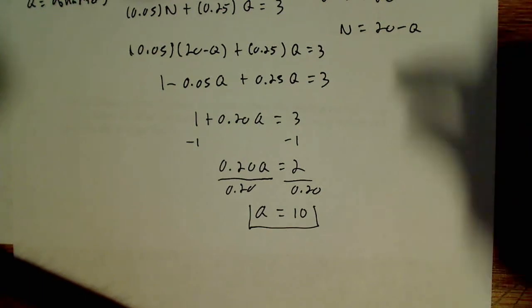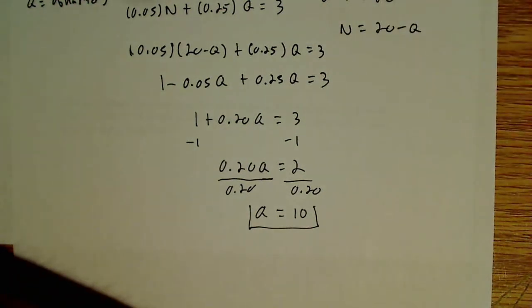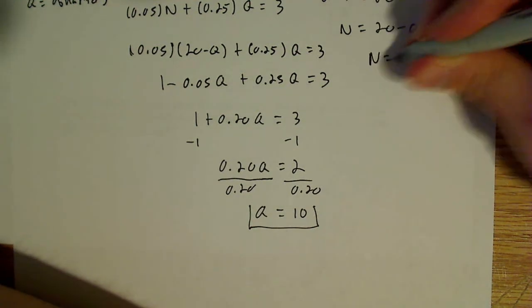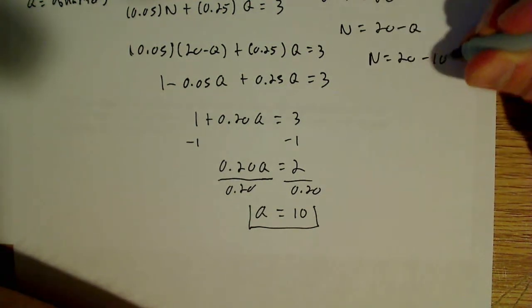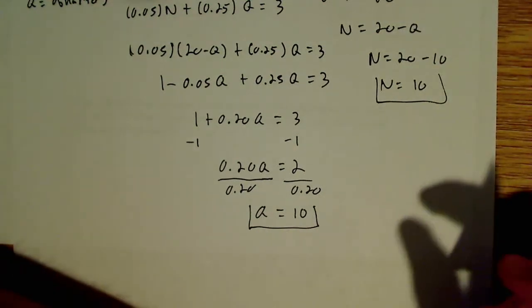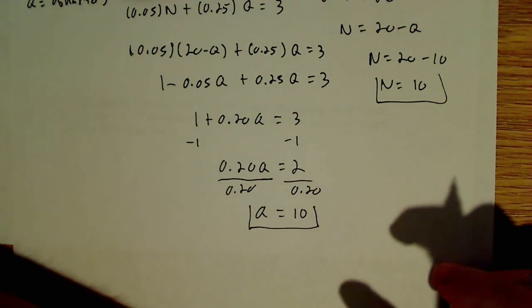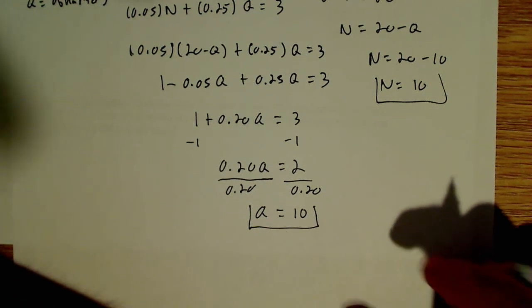And in order to find n, all I do is come back up to this equation right up here. Look, n equals 20 minus q. So n equals 20 minus 10. So n is equal to 10. So essentially what I have is 10 quarters and 10 nickels are given back to me to complete my three dollars that I want to change for.